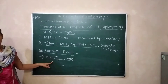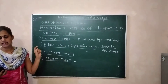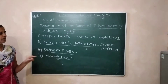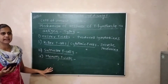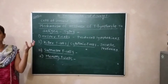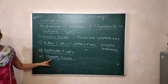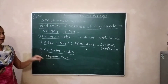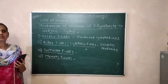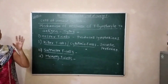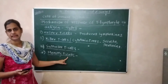Memory T-cells are previously sensitized cells which retain the memory of the antigen. In the future, when the same antigen enters the body again, these memory T-cells remember it and mount a faster immune response.